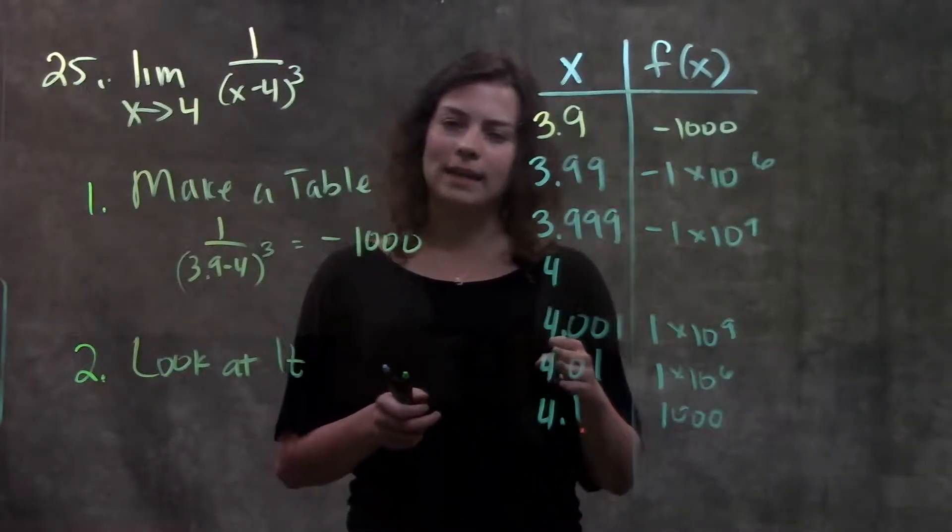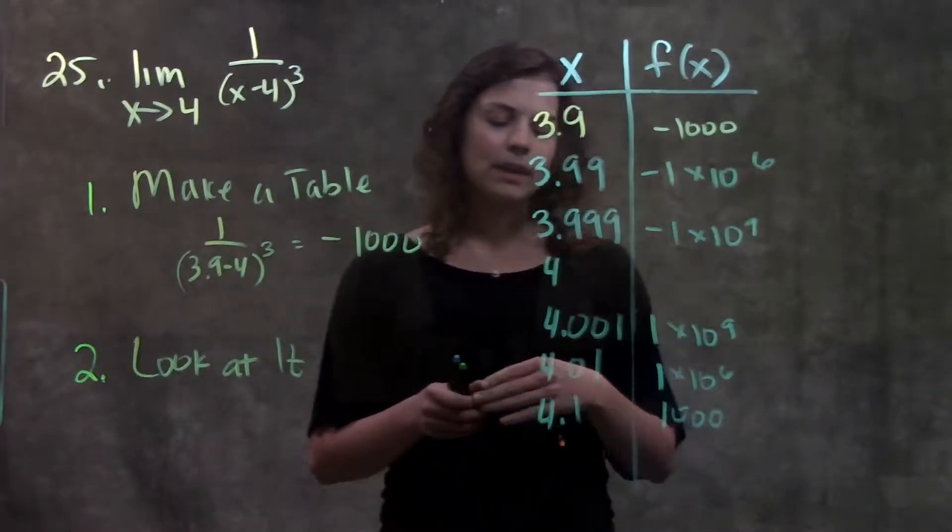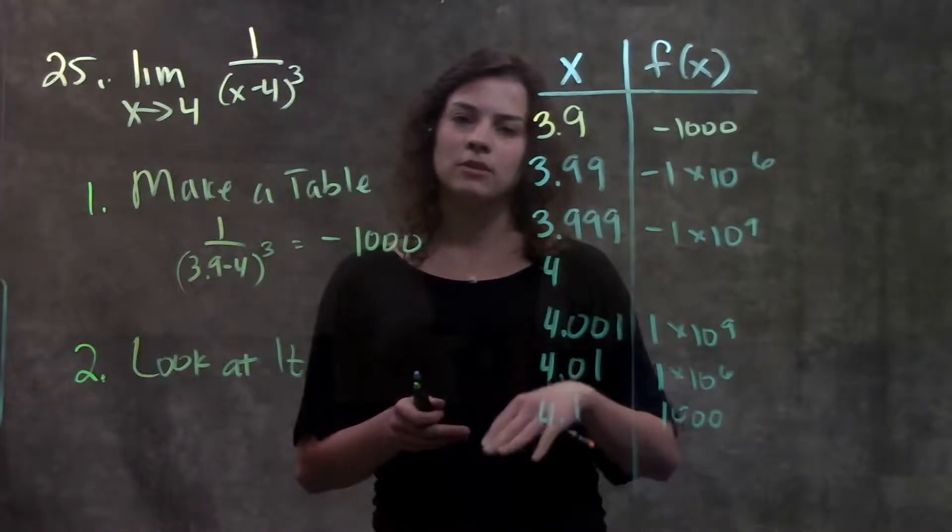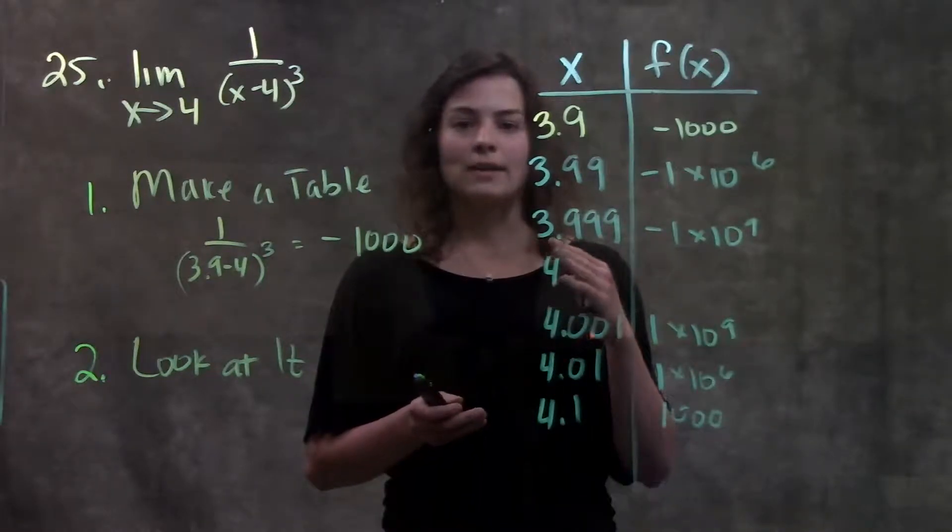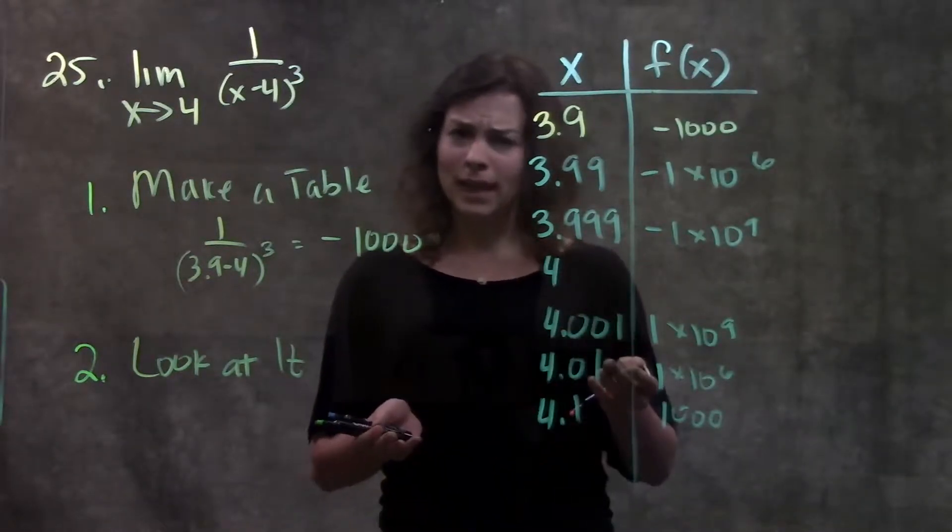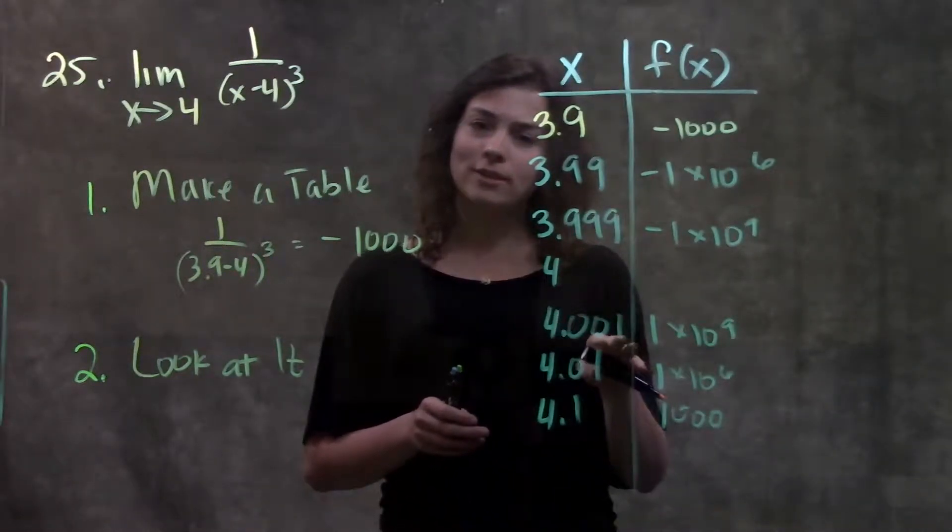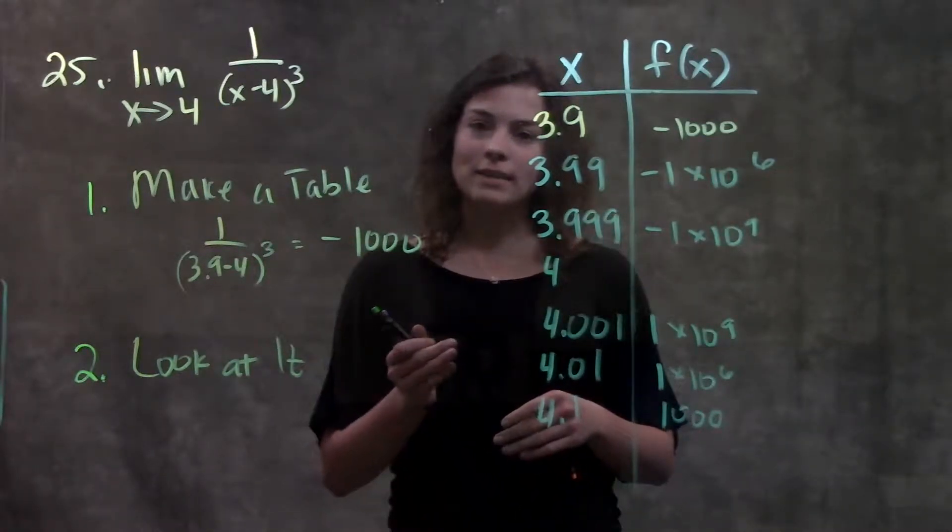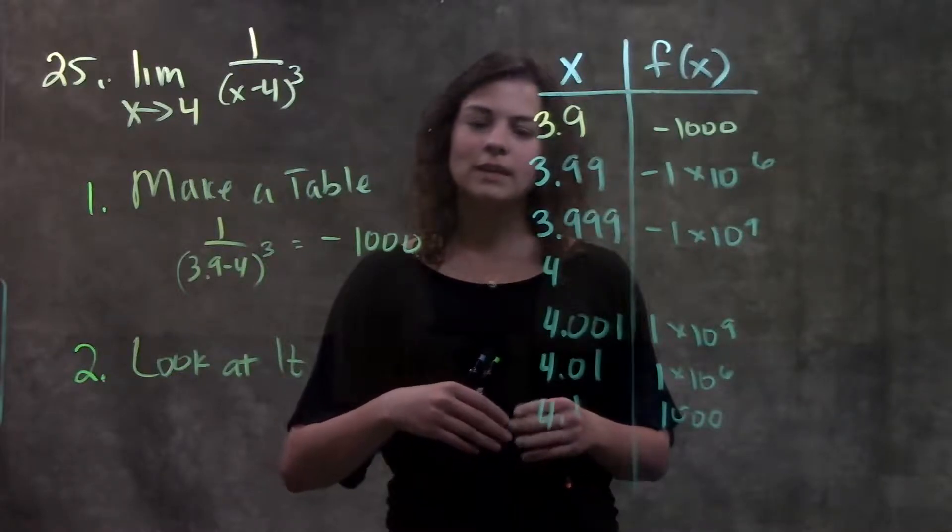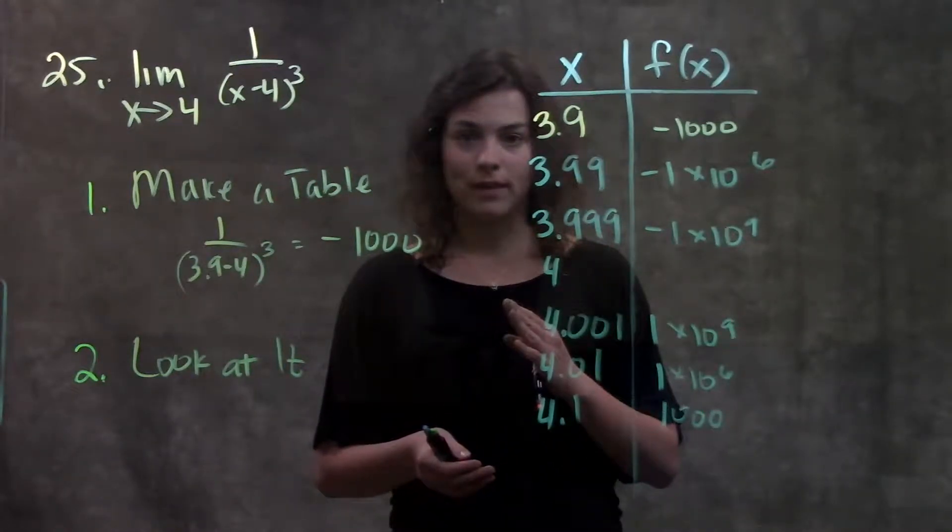But let's look at it from the right hand side, see what it's doing. When we look at it from the right hand side, as x values get closer and closer to 4 we see the opposite happening. It's getting infinitely larger as we get closer to 4. And same thing, we can imagine if we had hundreds of decimal places here how large would our function be. So from the left hand side we have our values approaching negative infinity. For the right hand side we have our values approaching positive infinity.